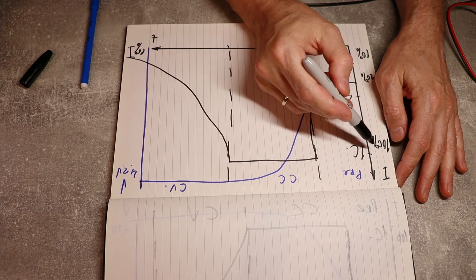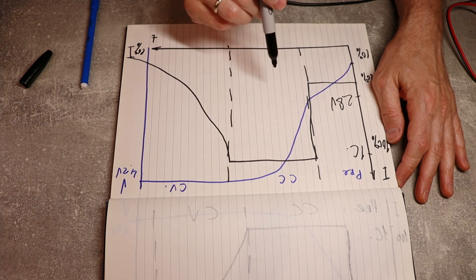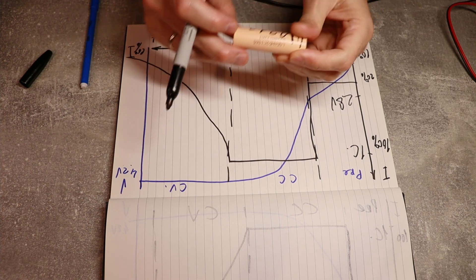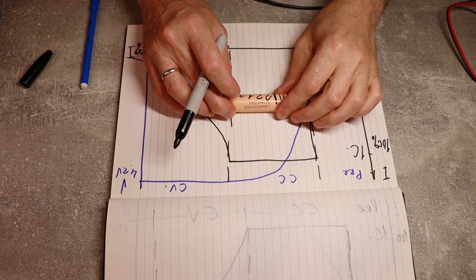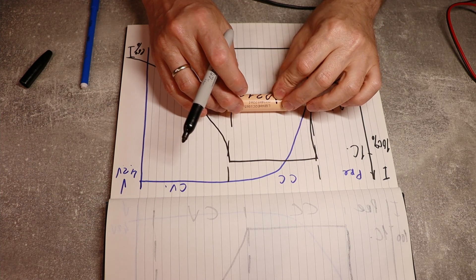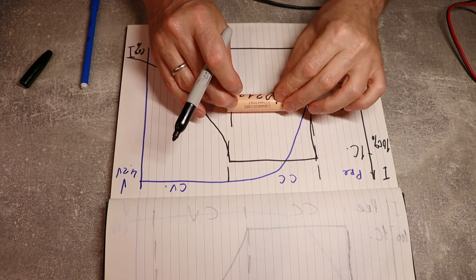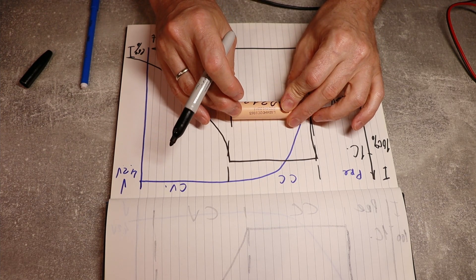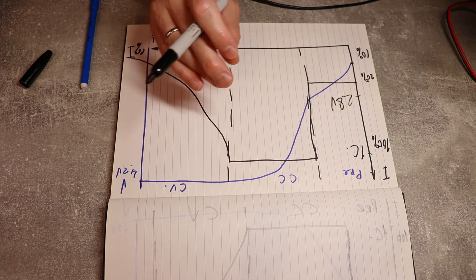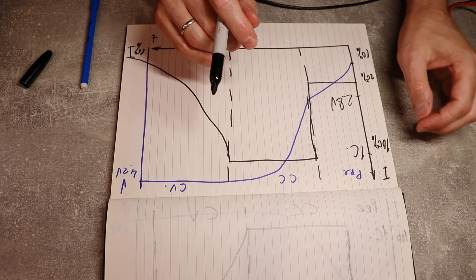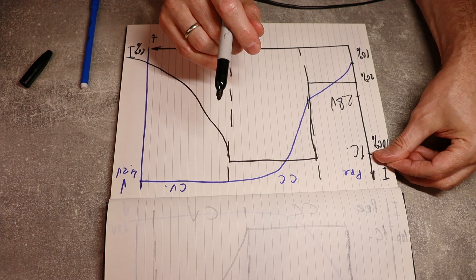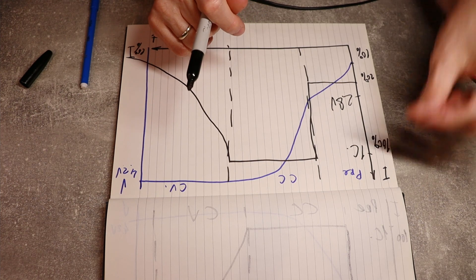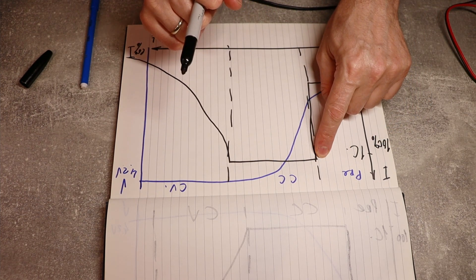So effectively, if 100% would be 1C, so what 1C means in this case is effectively if we have a cell which is 2,000 mAh, or 2Ah. So if we charge this cell with a 2Ah current, that will be 1C charge. So for example, if we charge it with 1C current, charging, that would be 100% of the charge rate.